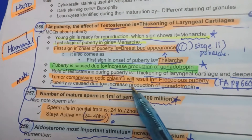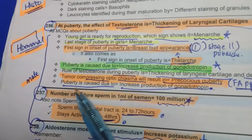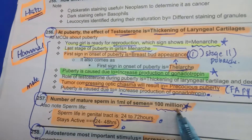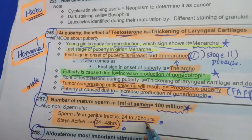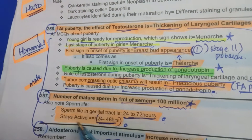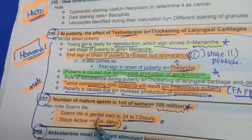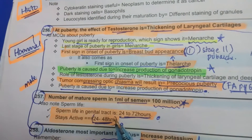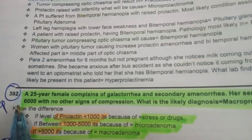The number of mature sperm in one ml of semen is 100 million. Sperm lifespan in the genital tract is 24 to 72 hours, although it is able to fertilize the egg only in the first 24 to 48 hours.